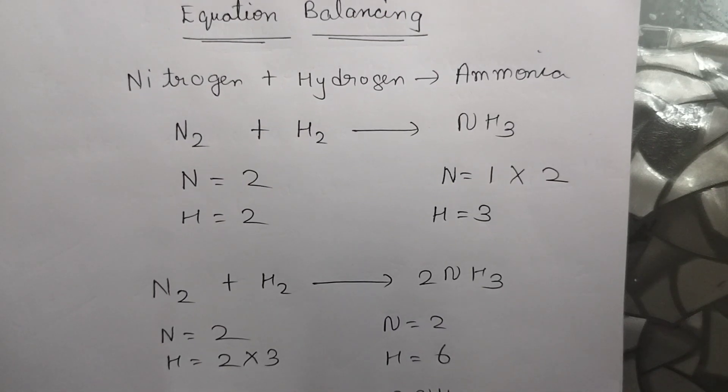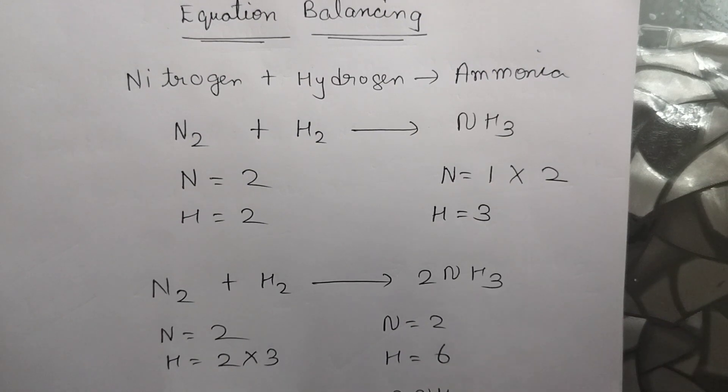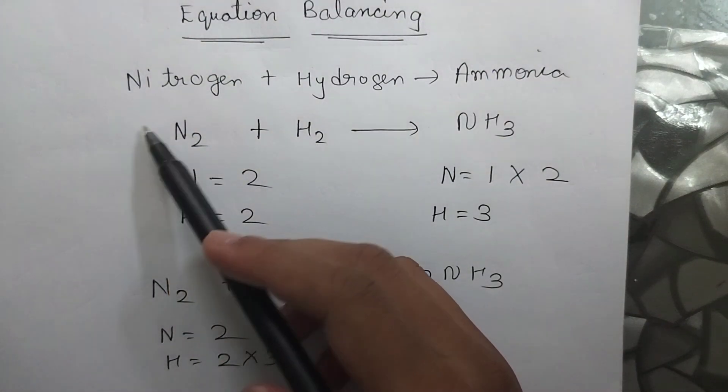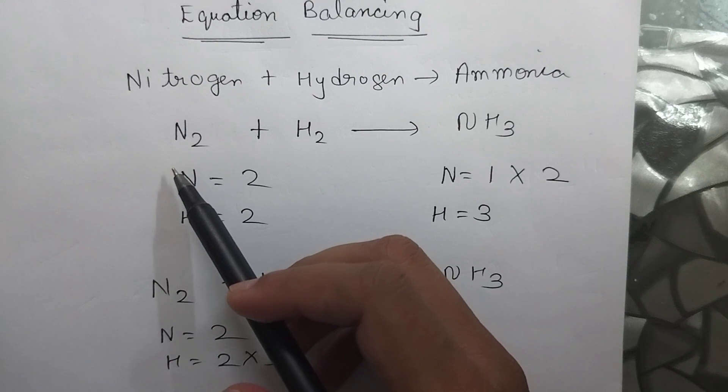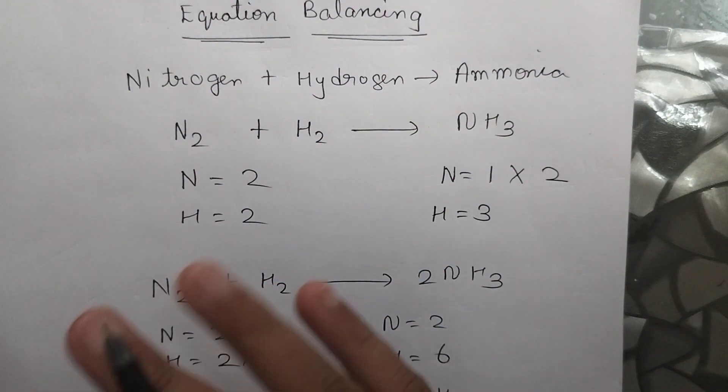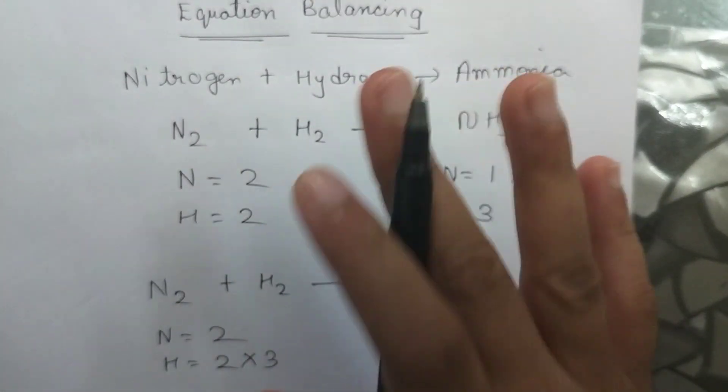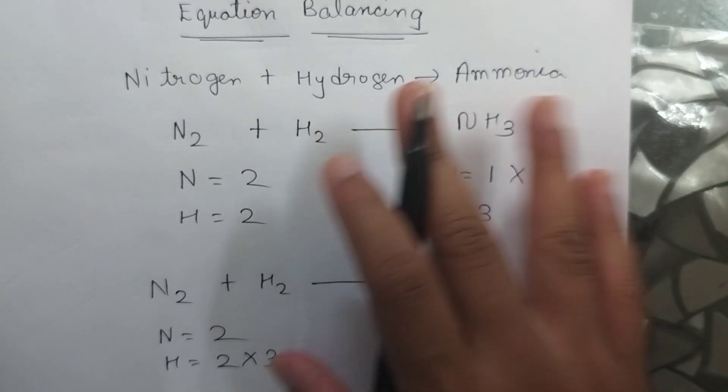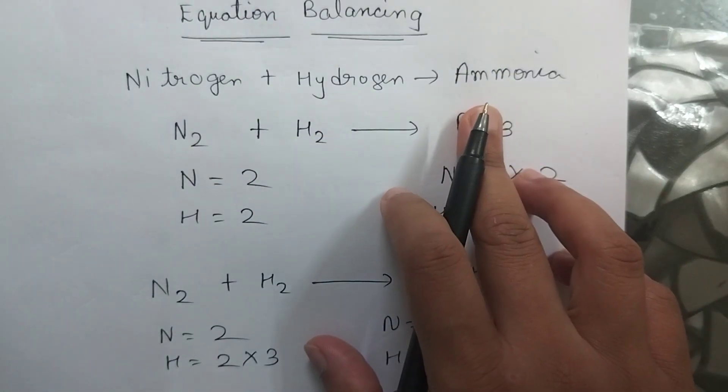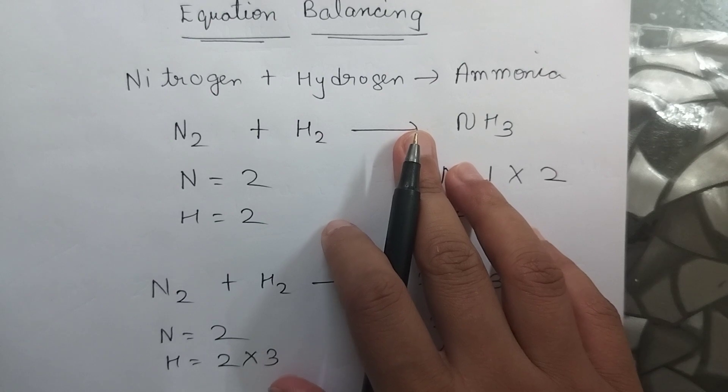Good morning students of class 10th. Let's study equation balancing. So the equation that we have taken over here, this equation is also known as Haber's process. Every equation doesn't have a name of some particular process, but this equation is the best way to prepare ammonia and thus it is given a name Haber's process.